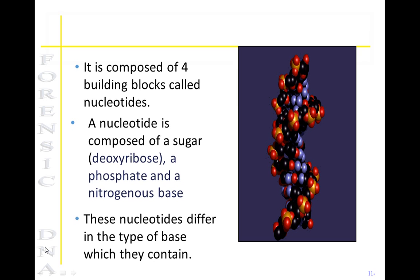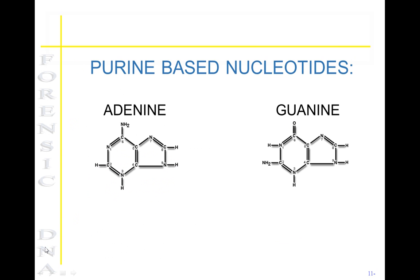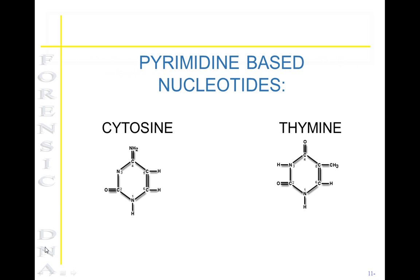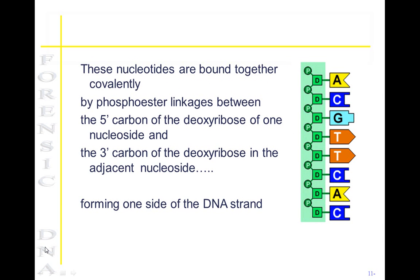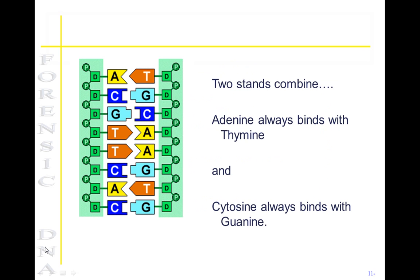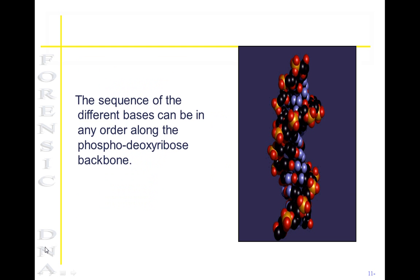These nucleotides differ in the type of base that they contain. There are two purine-based nucleotides and two pyrimidine-based nucleotides. The nucleotides are bound together covalently by the phosphoester linkage between carbons, which forms one side of the DNA strand. Two strands combine to form the DNA structure. Adenine always binds with thymine and cytosine always binds with guanine. The sequence of the bases can differ along the order of the backbone.